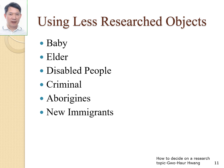Next, we can use objects that are relatively rarely studied. The most common research objects in the world are college students — because most researchers are university professors, using their students as research objects is natural. The second most common object is primary school students, because they do not feel pressured and are more cooperative with teachers. The third common object is middle school students. The rest are relatively rare, such as children, the elderly, disabled people, criminals, or aborigines.